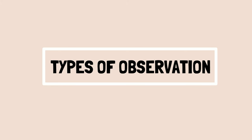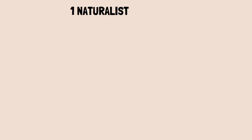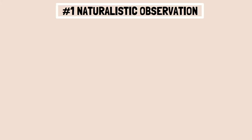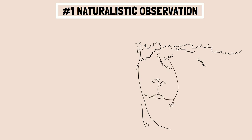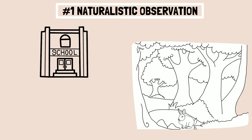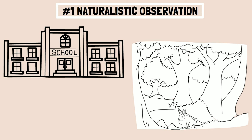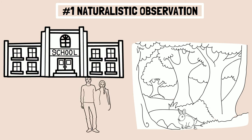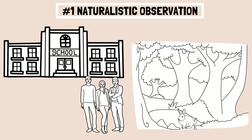Types of Observation. 1. Naturalistic Observation: When observations are done in a natural or real-life setting, such as animals being observed in the jungle or adolescents being observed at school, it is called a naturalistic observation.